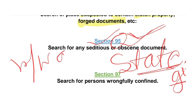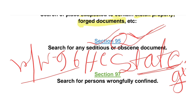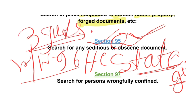As I mentioned at the beginning of the video, Section 95 is read with Section 96. Section 96 states that if a search warrant has been issued under Section 95, in order to challenge or set aside that order, an application can be filed before the High Court. It is only the High Court that can hear and dispose of such an application to set aside an order passed under Section 95.